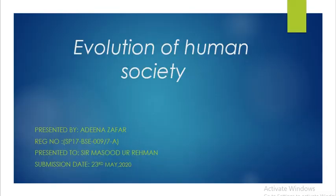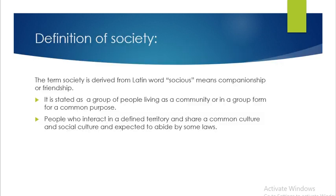This is how we look at changes in human society. First we will discuss about what is society. The term society is derived from Latin where socius means companionship or friendship. It is stated as a group of people living as a community or in a group for a common purpose. People who interact in a defined area to ensure a common culture are expected to abide by certain norms.